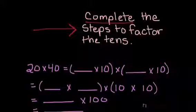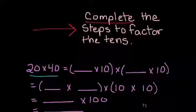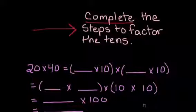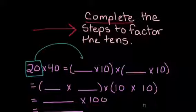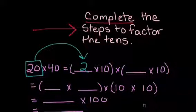Now, let's use some of our multiplication properties and factor the 10s. Here I have 20 times 40. I'm going to take a look at my first blank. I have blank times 10 times blank times 10. If I look at my first factor, I have 20. I know that 2 times 10 is 20, so I have factored the 10s.